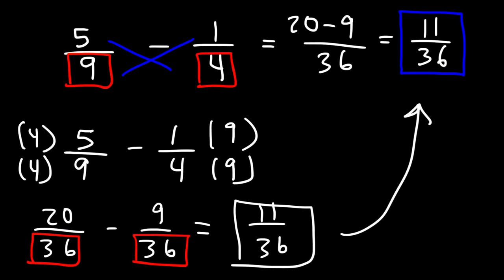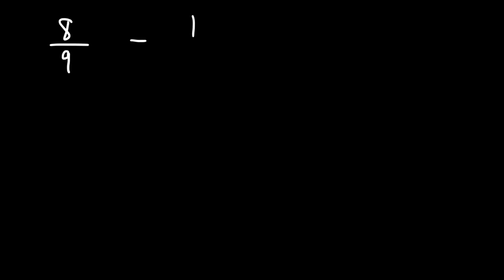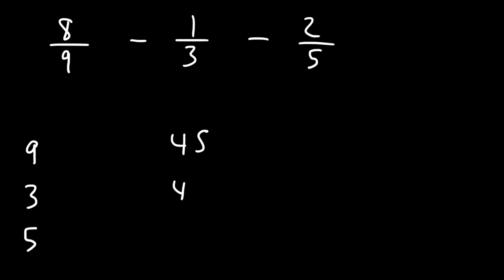This technique is useful if you have multiple fractions — if you want to subtract 3 or 4 fractions. So let's say we have 8 over 9 minus 1 over 3 minus 2 over 5. We need to find a common denominator for those three fractions. What is the least common multiple of 9, 3, and 5? Since 3 already goes into 9, any multiple of 9 is a multiple of 3, so we don't need to worry about that. 9 times 5 is 45, so 45 is the lowest number that goes into 9, 3, and 5.